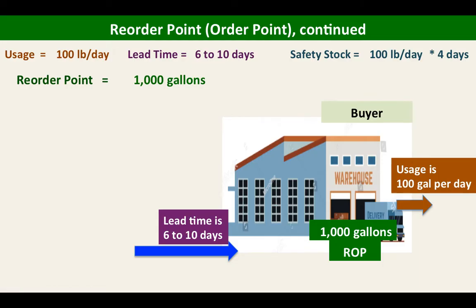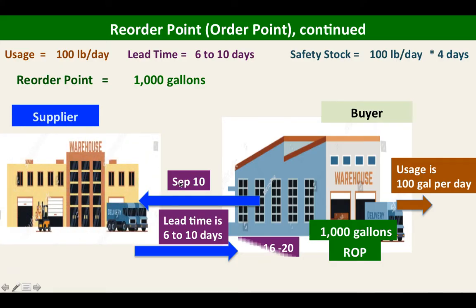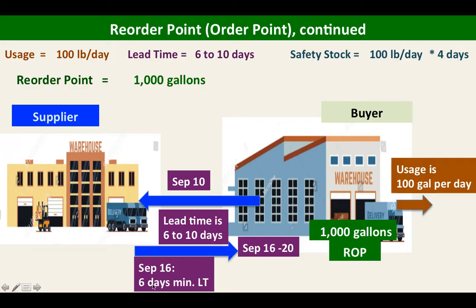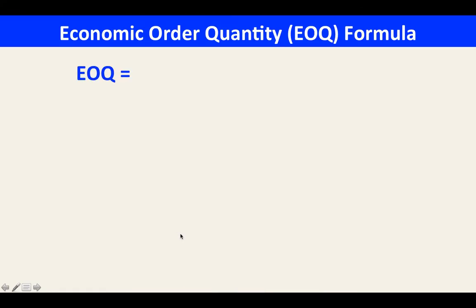When the number of stocks in the warehouse reaches 1,000 gallons, that is when we place the order. If we place the order on September 10 to our supplier, we can expect to receive it after 6 days — which is September 16. However, it can be delayed to the 17th, 18th, 19th, or 20th. So we need a buffer or safety stock for 4 days. The minimum lead time covers up to September 16, and our safety stock covers September 17 to 20.